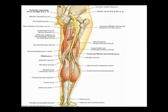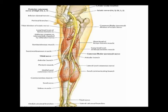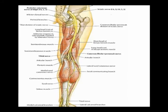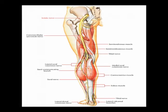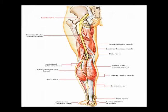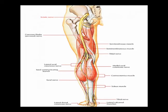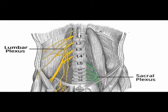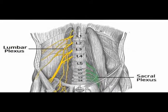A few centimeters superior to the popliteal fossa, the sciatic nerve bifurcates into its two terminal branches: the common peroneal nerve and the tibial nerve. The tibial nerve is the larger of the two terminal branches. It provides motor and sensory innervation to most of the posterior lower leg and foot, and receives its nerve signals from vertebral levels L4 through S3.